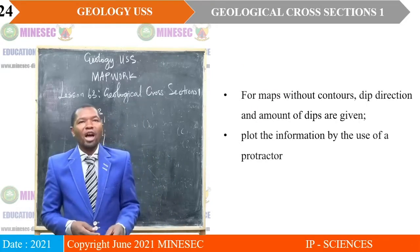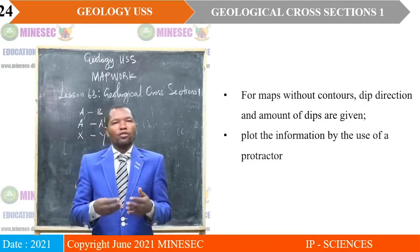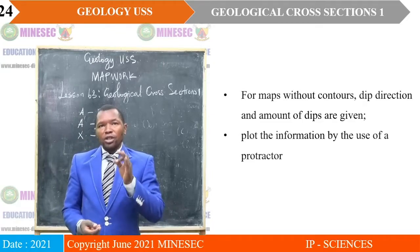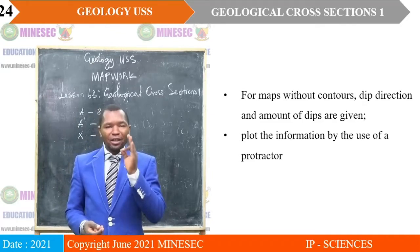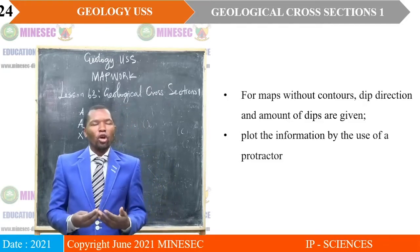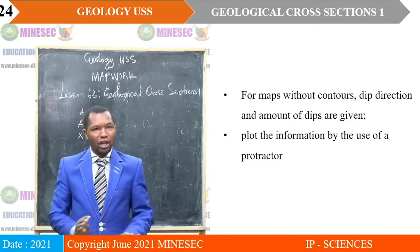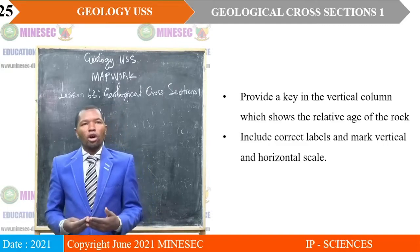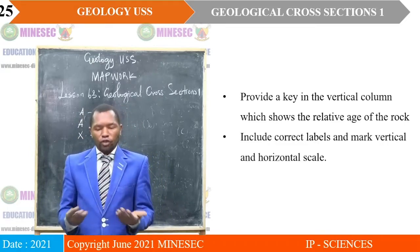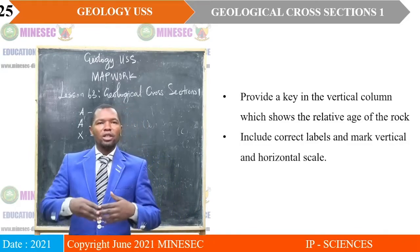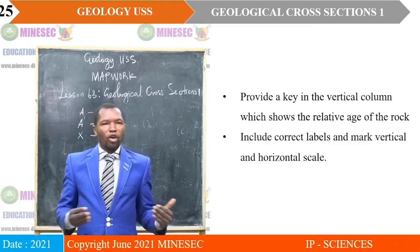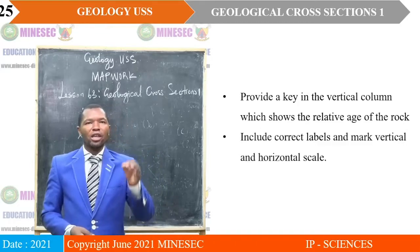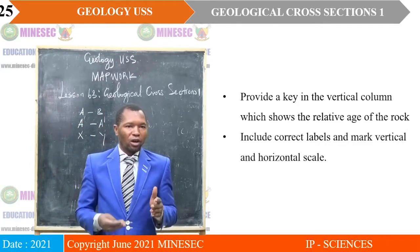For maps without contours, dip directions and amount of dips are given. Plot the information by the use of a protractor if it must be to scale. Then provide a key in the vertical column, which shows the relative ages of the rocks — relative dating here means approximate ages, doing a comparison using terms like older and younger. Then include correct scales and the map's vertical and horizontal scale.